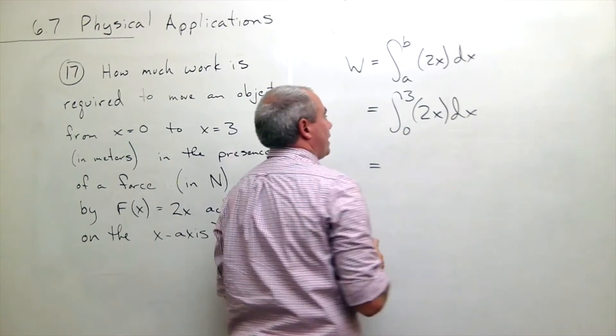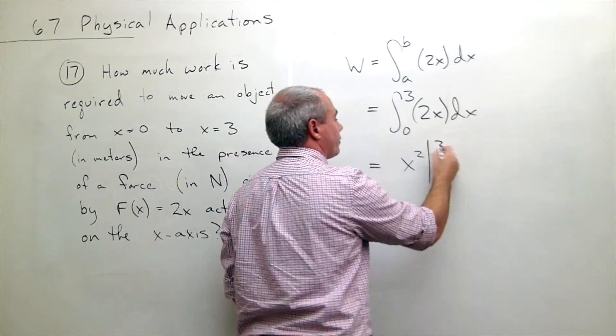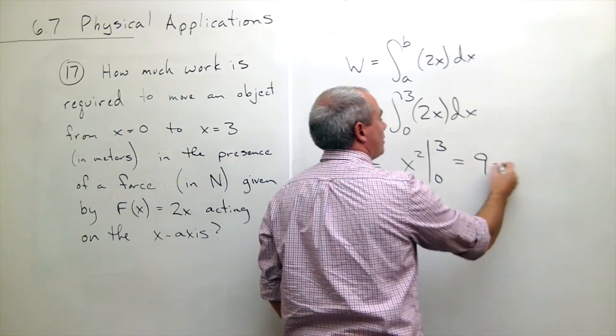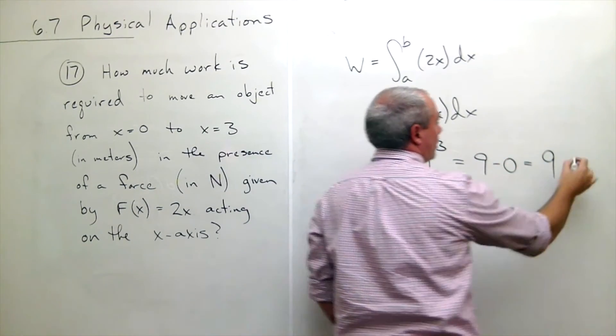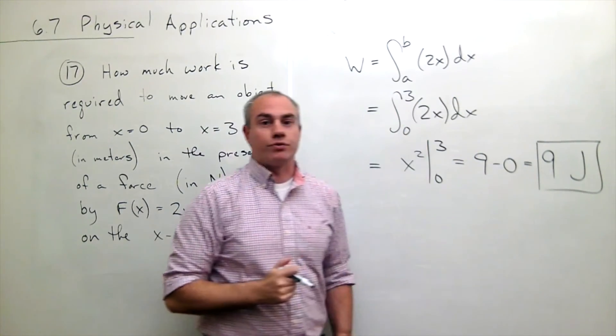Let's integrate it. The antiderivative would just be x squared, evaluated from 0 to 3, which is just 9 minus 0, or 9, and work is measured in joules, so 9 joules of work.